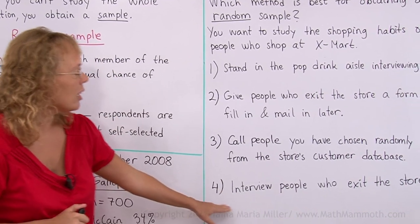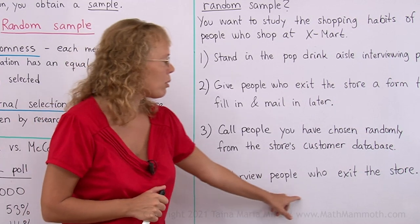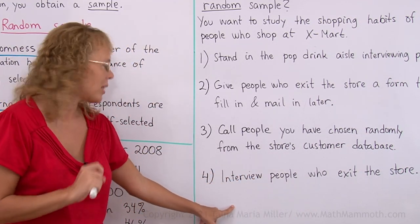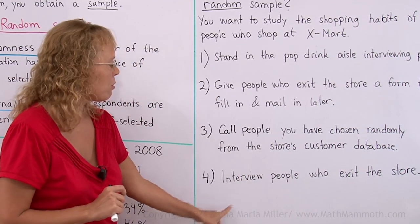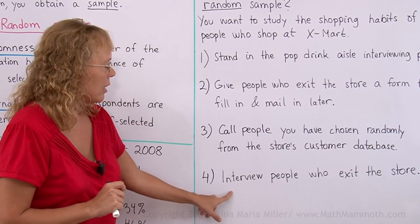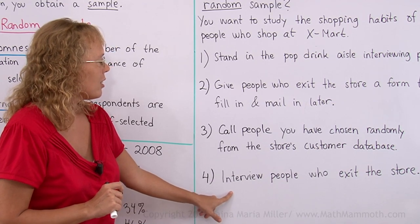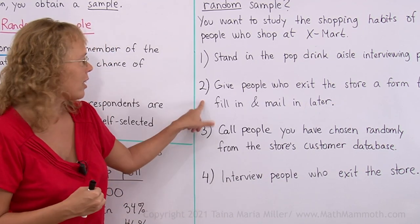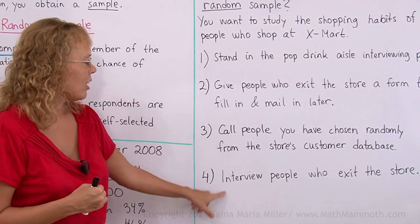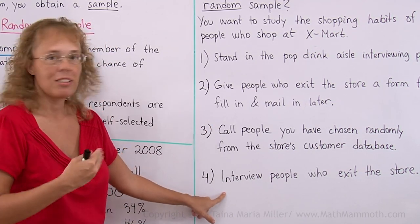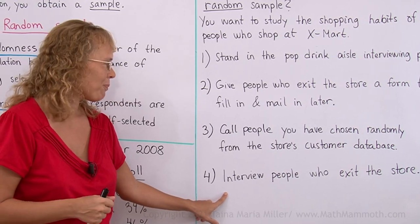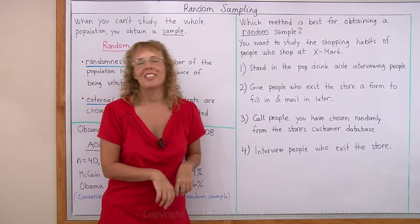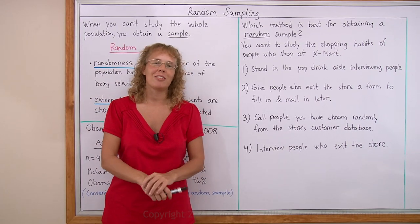The last method — interview people who exit the store — is the second best of these four methods. You are not going to use self-selection like in the mail-in form method, and you are also trying to make it as random as possible. Okay, we are all done with this lesson and I hope it was helpful.